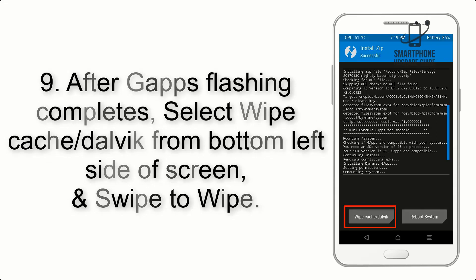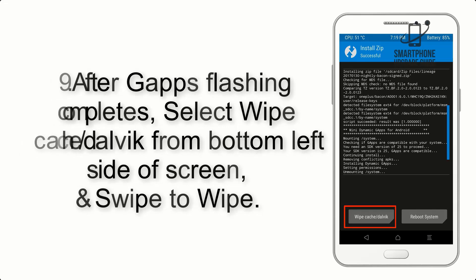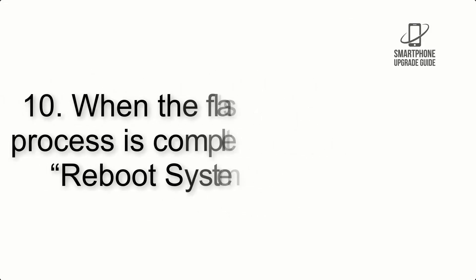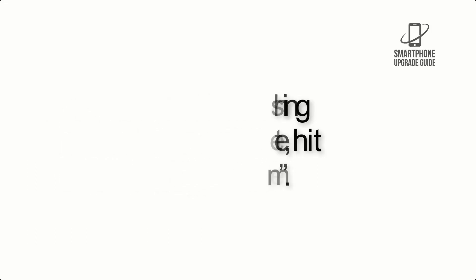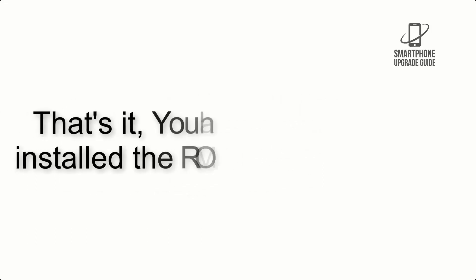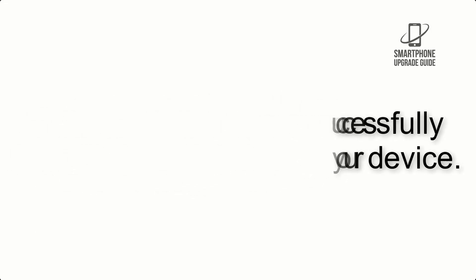Step 9: After GApps flashing completes, select Wipe Cache and Dalvik from the bottom left side of the screen and swipe to wipe. Step 10: When the flashing process is complete, hit Reboot System. That's it — you have successfully installed the ROM on your device.